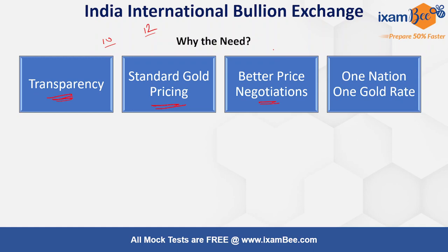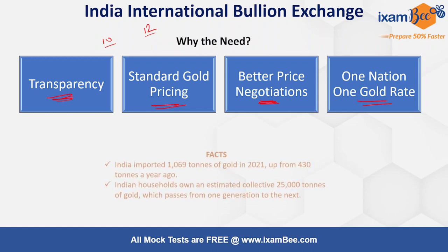Freight charge is something you can't verify as a buyer — someone says ₹10, someone says ₹12, you can't verify it. That is not a transparent way. So transparency needed to be brought into the system. Then there is standard gold pricing — as illustrated with the Mumbai and Kolkata example. Then better price negotiation: currently a Kolkata-based bank and a Mumbai-based bank each import smaller quantities per their local demand. But through IIBX, bigger members can go to the UAE market and negotiate for much larger quantities, getting better prices. This leads to 'one nation, one gold price.'